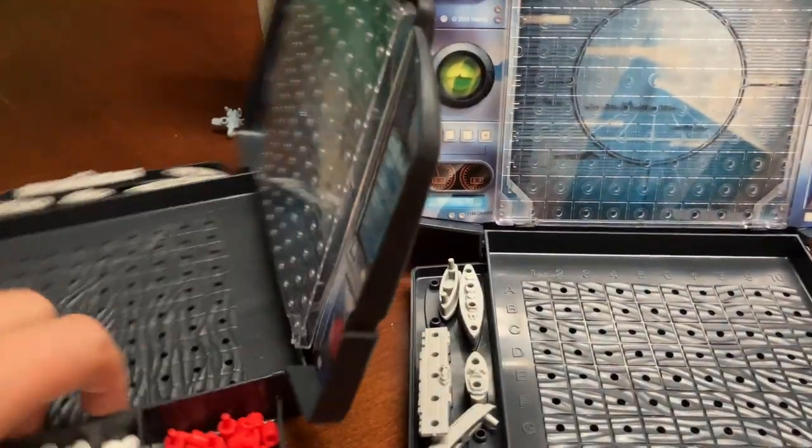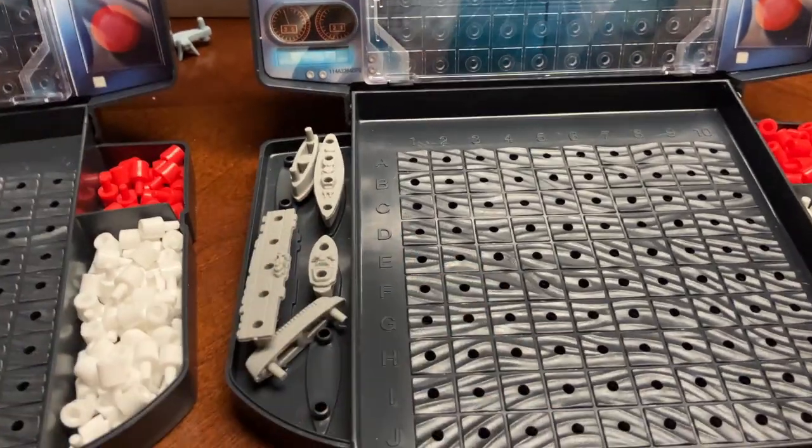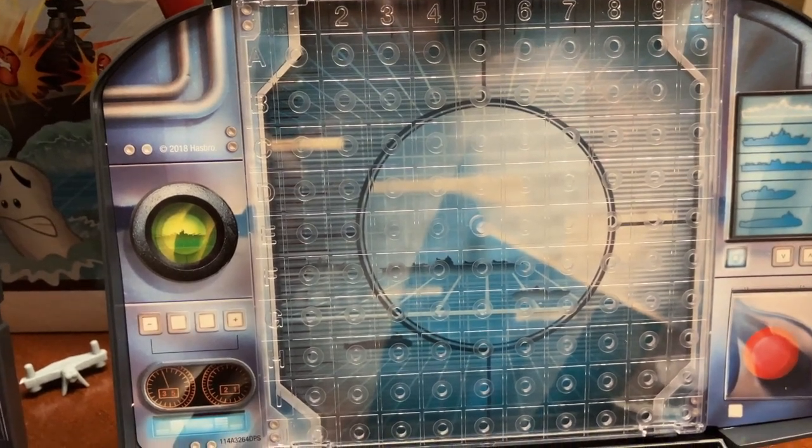But the bottom half of the board is the grid where you're going to put your ships and the top half is where you are going to record your hits and your misses.